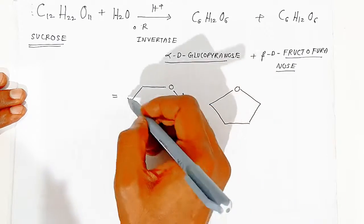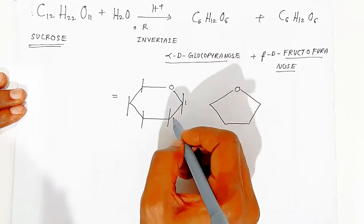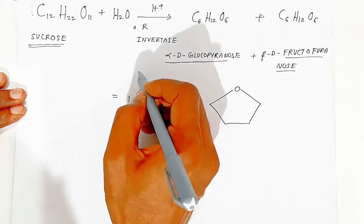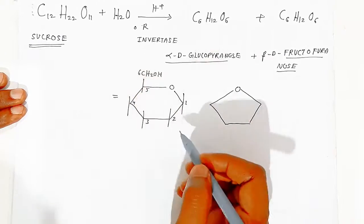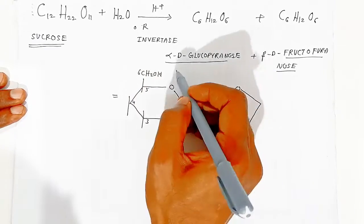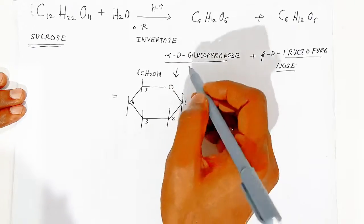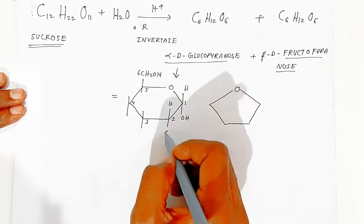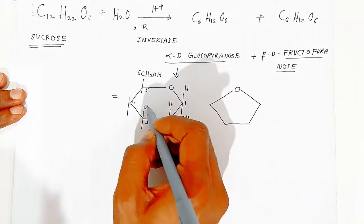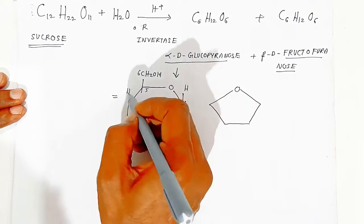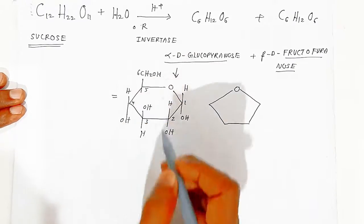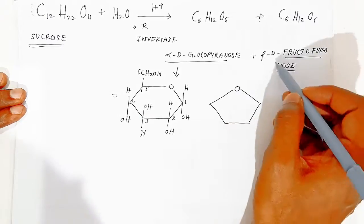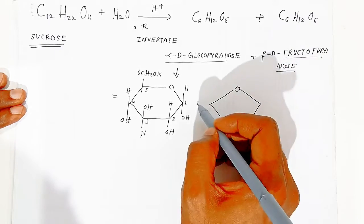Because carbon is tetravalent, draw the tetravalency at each carbon. Label carbons 1 through 5, with carbon 6 as CH₂OH. Then fill the remaining valencies with hydrogen and hydroxyl groups. This gives you the alpha-D-glucopyranose structure.